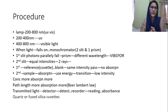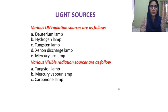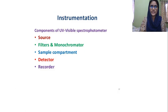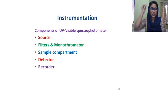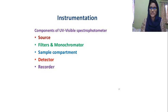The sample compartment — the cuvette — is made up of quartz or fused silica. This is the instrumentation. The components are: a source, filters and monochromators, then the sample compartment which is the quartz cuvette, and then the detector and recorder.